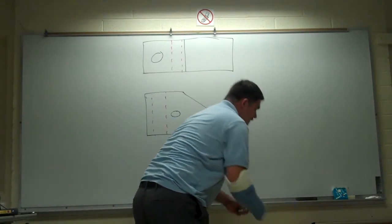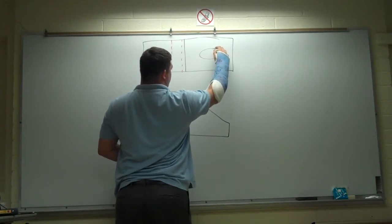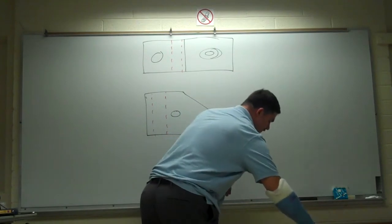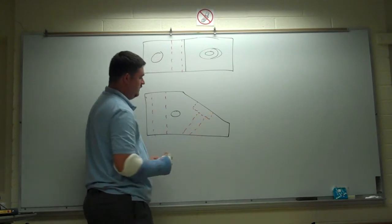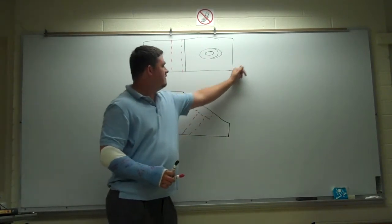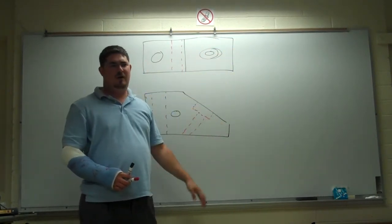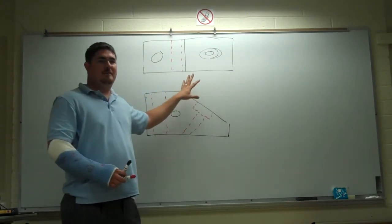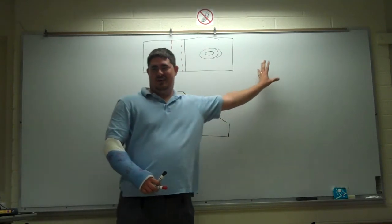But now I've got that hole here, right? Like that, right? So now I want to look at it this way to be able to see. Do I need to see the whole object from the angle? No, just this one. So what we're doing is a partial auxiliary view.